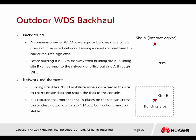The last example is WDS. A company provides WLAN coverage for building site B, which does not have a wired network. Leasing a wired channel from a carrier requires high cost. Site A has internet access but site B does not. Pulling cable from site A to site B, which is 2 km away, would be very expensive.